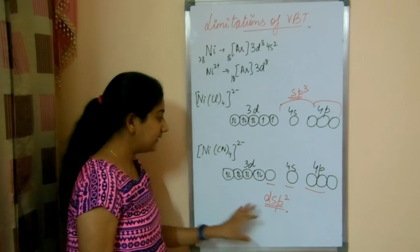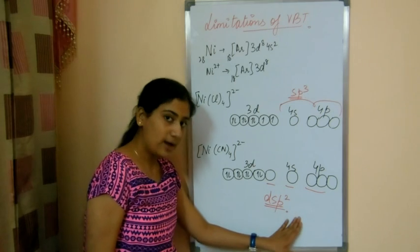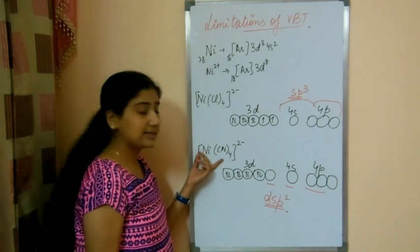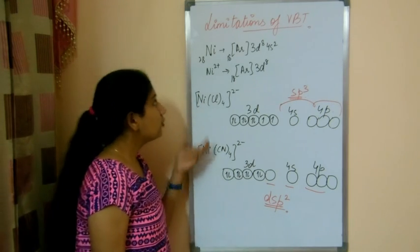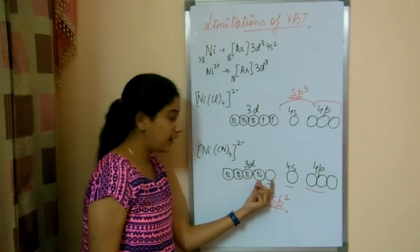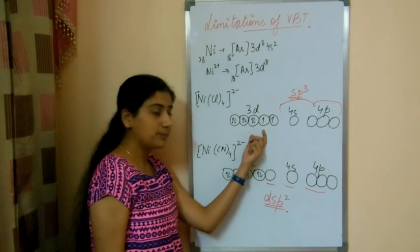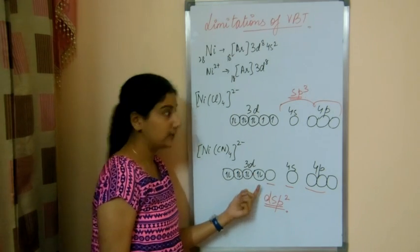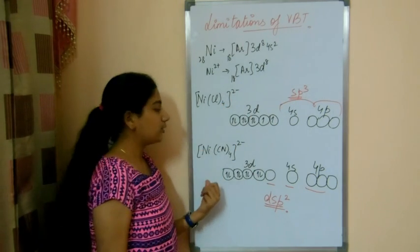This was seen experimentally, that dsp2 hybridization will be here because it was seen that it had square planar structure. So valence bond theory could not explain why this combining occurred, why this electron jumped to the previous orbital and made it full. The valence bond theory could not explain this thing.